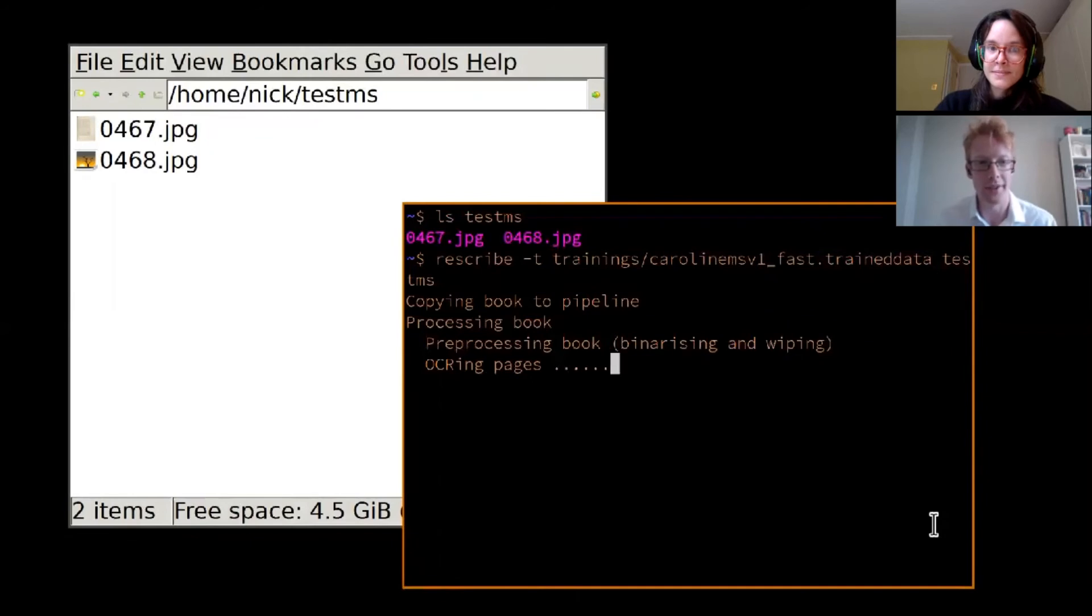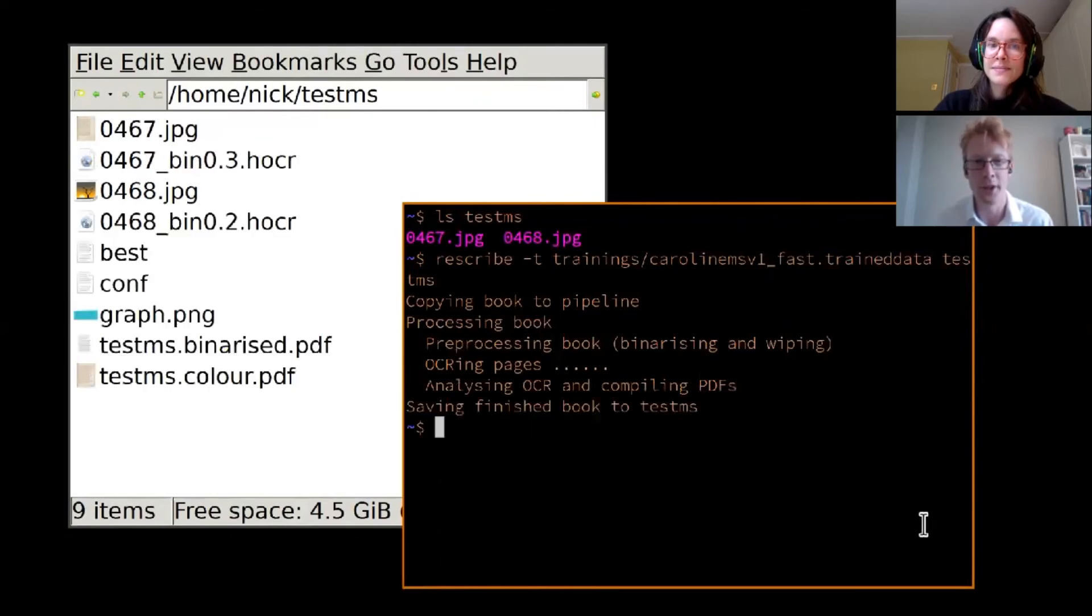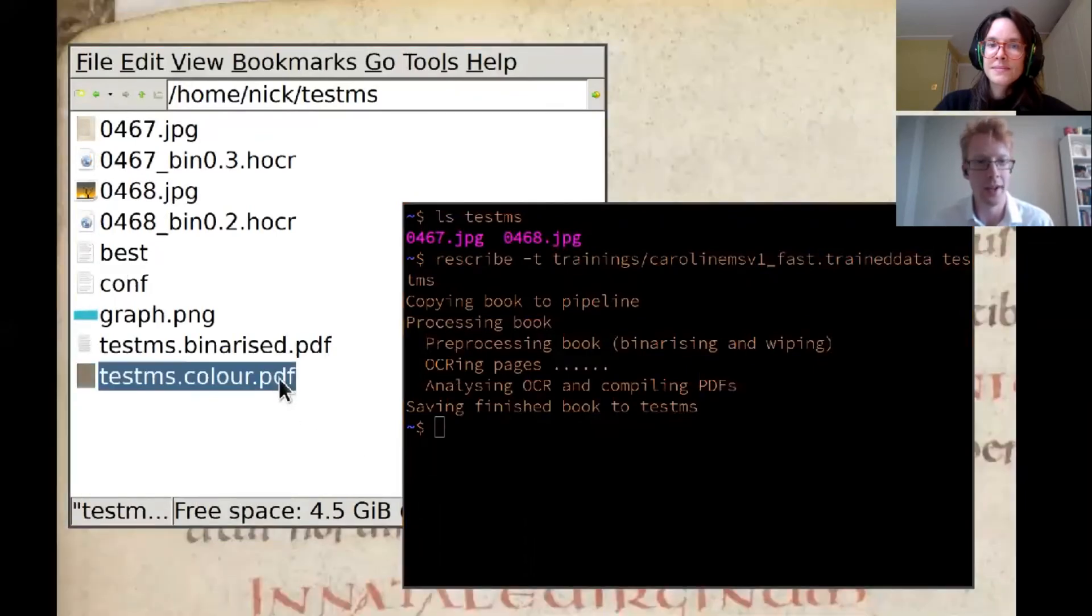Once you do that, you can see it starts pre-processing, which does the binarization Antonia talked about, and wiping, which is removing marginalia and other stuff which is going to hamper the process. Then it OCRs and then glues everything together and creates a PDF, which I'm opening now.